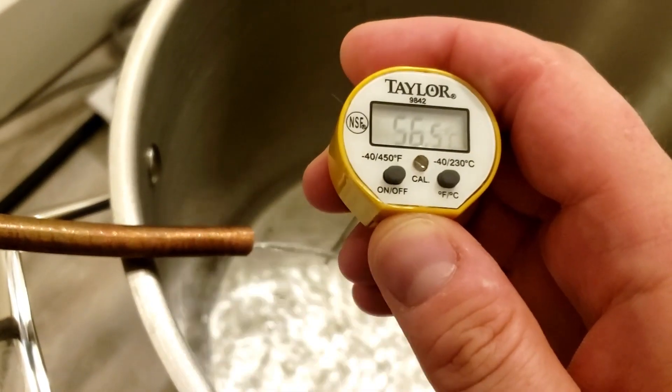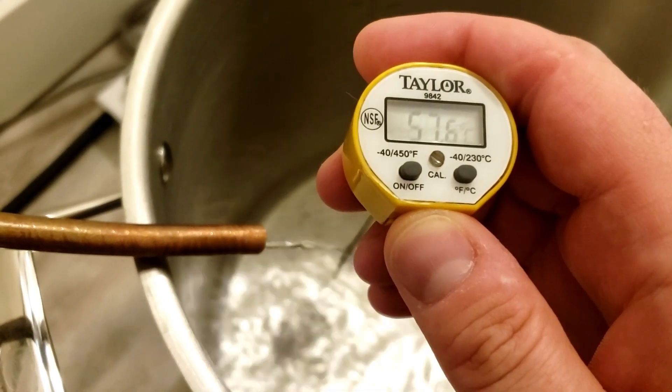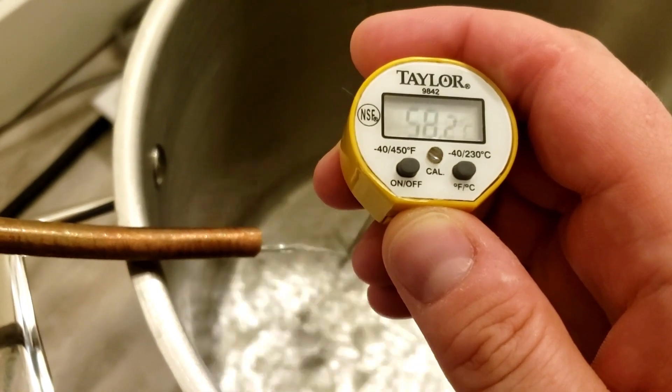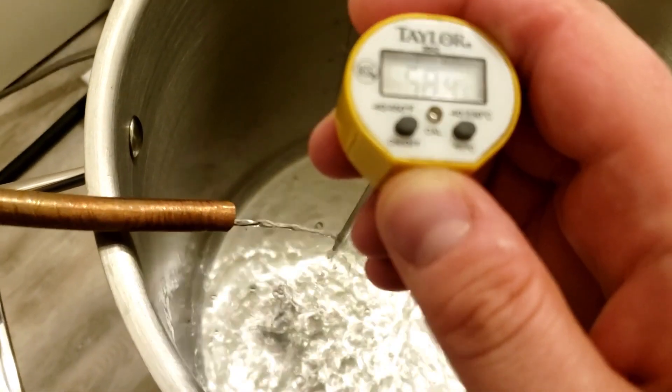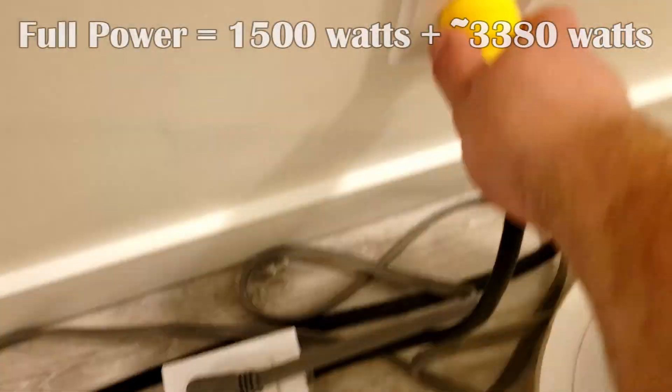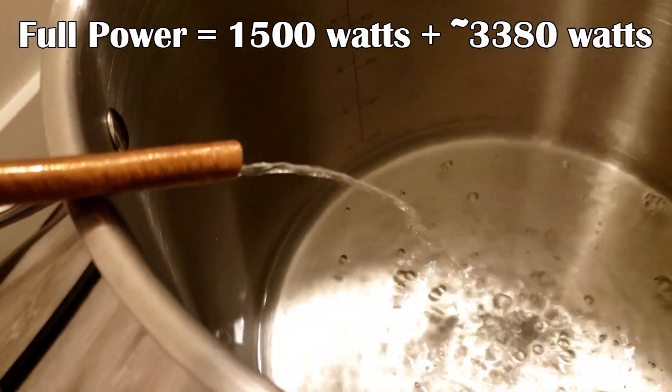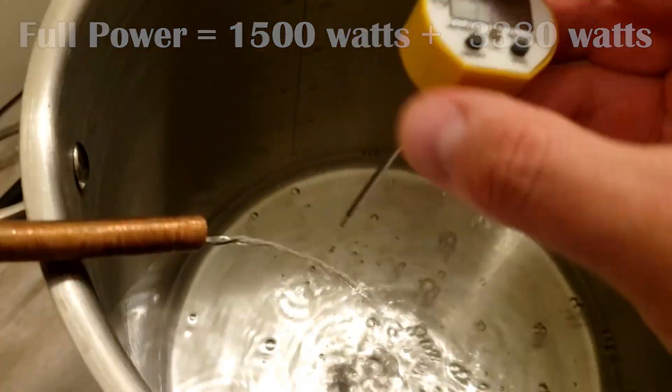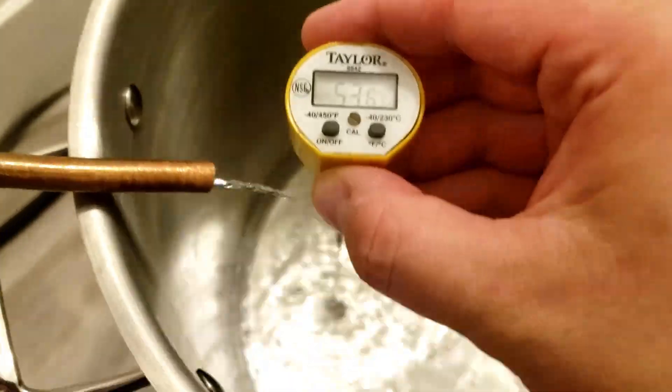Now, the stripping run is underway and distillate's coming off at about 58 degrees Celsius and that is not great. I went and unplugged my 1500 watt element and the temperature dropped like a measly 4 degrees Celsius. So we're still not where we want to be, not even close to room temperature.